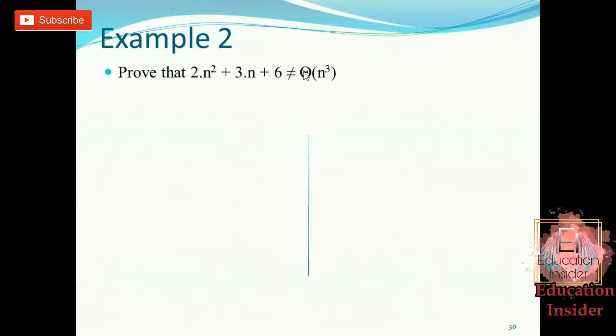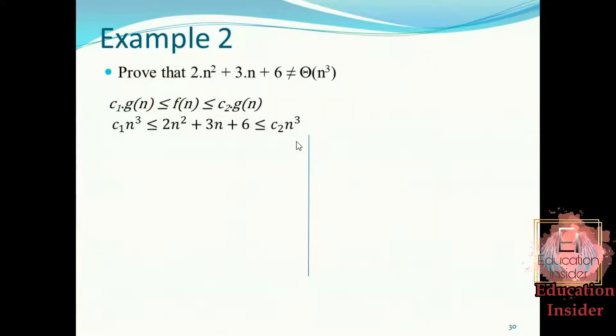So let's move to another example number two. Now again we need to disprove this, as this sign is representing. First thing first, let's assume the inequality. Now populate the values of f(n) and g(n) into it. Now split this inequality into two parts.